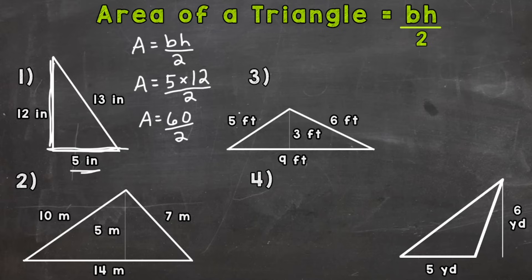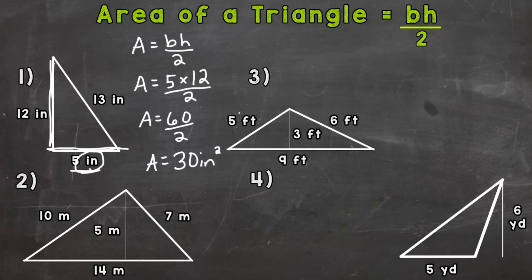60 divided by 2 gets us to 30. Now we need to put our unit of measure, which is inches, and we put a 2 up here — we read that as area equals 30 square inches. We make that a square unit because there are square inches that cover that triangle to show how much space that figure takes up. So area equals 30 square inches.